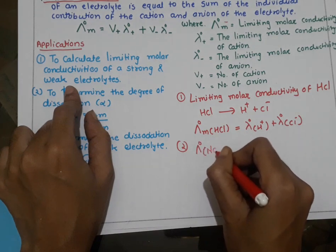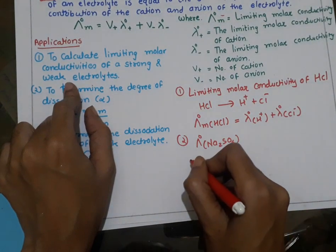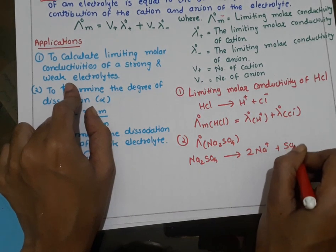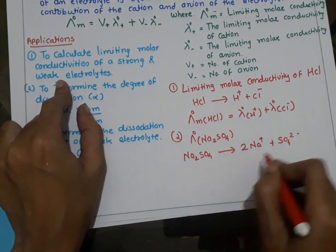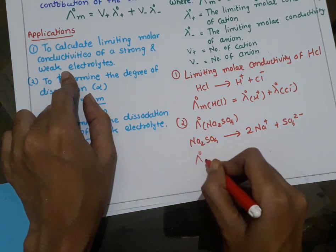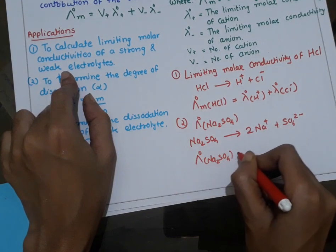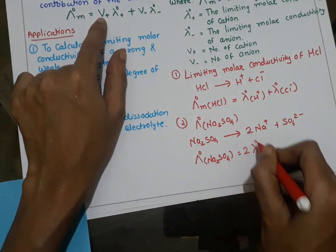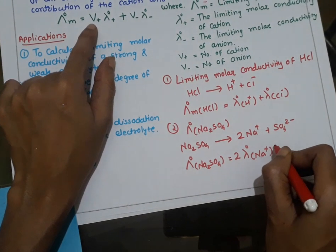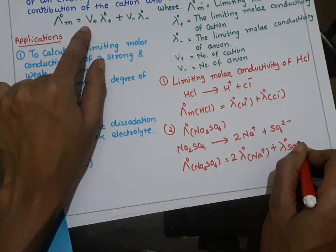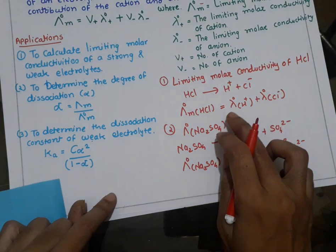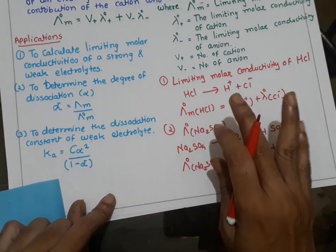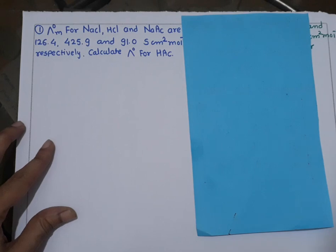Next example: finding the limiting molar conductivity of Na2SO4. Na2SO4 dissociates into 2 Na plus ions and SO4 2 minus ion. Here 2 is the number of cations, so the limiting molar conductivity of Na2SO4 is written as 2 times lambda naught Na plus plus lambda naught SO4 2 minus. In this way, by knowing the limiting molar conductivity of respective cations and anions, we can find the limiting molar conductivity of the electrolyte.